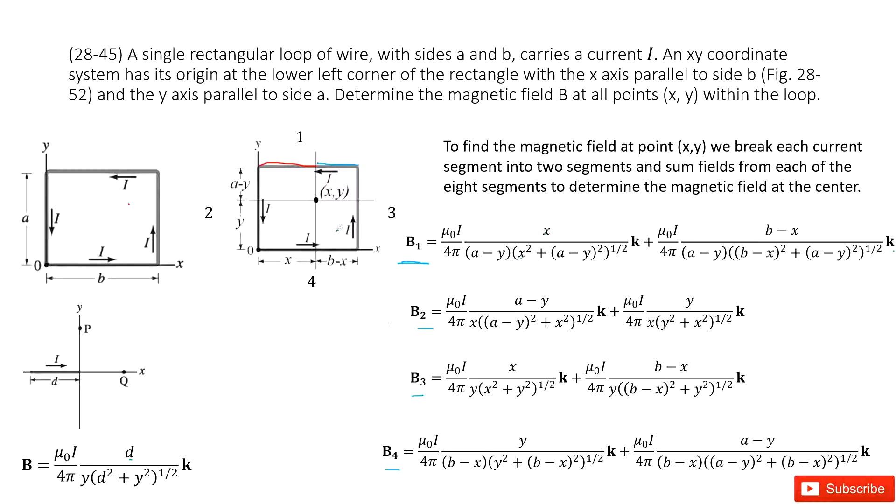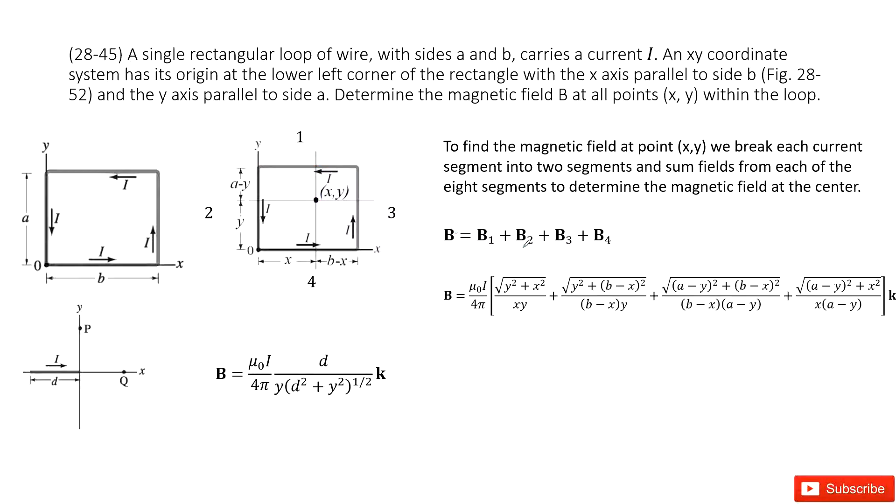Now finally, we need to determine magnetic field at this location. We need to add B1, B2, B3, B4 together. So you add them together and input all the B1, B2, B3, B4. You can find the answer there. Thank you.